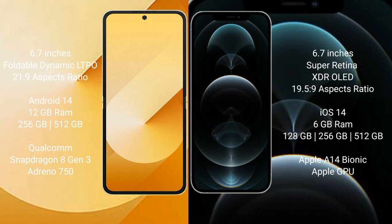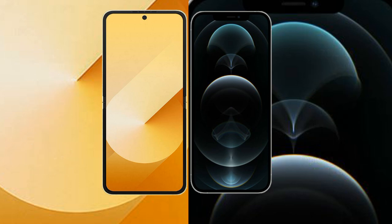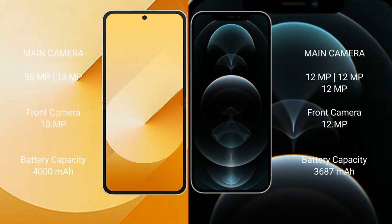The Samsung Galaxy Z Flip 6 comes with 12GB of RAM and 256GB or 512GB of internal storage, powered by a Qualcomm Snapdragon 8 Gen 3 processor with an Adreno 750 GPU. The iPhone 12 Pro Max comes with 6GB of RAM and 128GB, 256GB, or 512GB of internal storage, with an Apple A15 Bionic processor and a separate GPU.